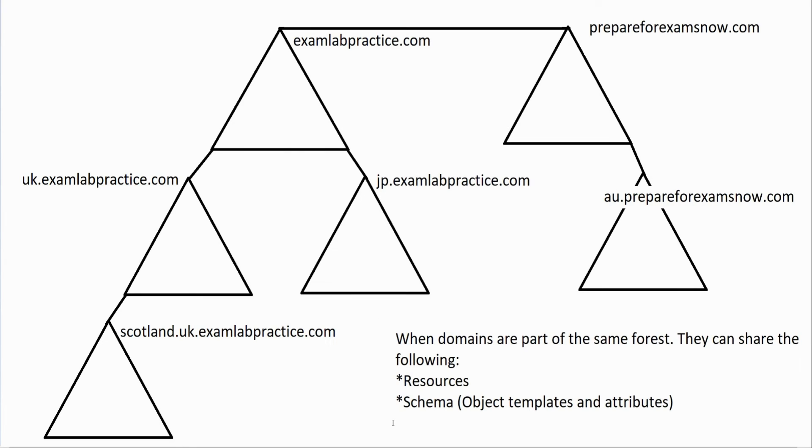Now, the other thing that domains that are part of the same forest will share is this thing called the global catalog. The global catalog is a part of the active directory database that if you're part of the same forest, you share the global catalog. And this is part of what allows domains to search for objects in different domains. So for example, if I'm in Scotland and I'm trying to look up somebody's user information over in Australia, I could do that, especially if I needed their contact information or something like that, because of this thing called the global catalog that's shared across the entire forest. Not to get too deep into global catalogs right now. I just wanted to give you that basic idea.